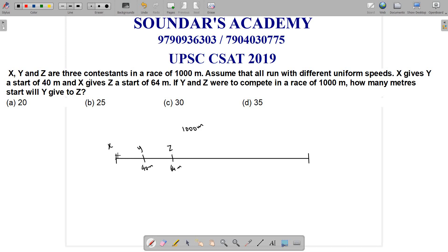When we consider X, when X covers 1000m from zero, Y will reach 1000m. When we consider Y and Z, Y starts ahead, so Y will be covering the remaining distance of 960 meters.